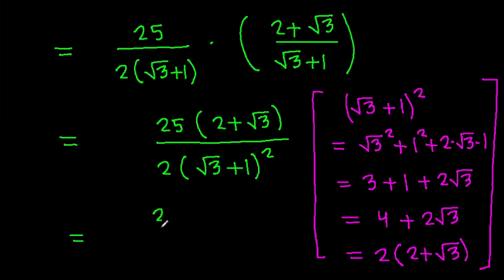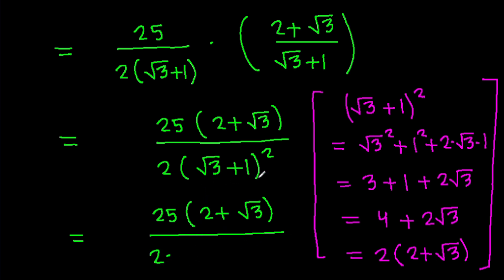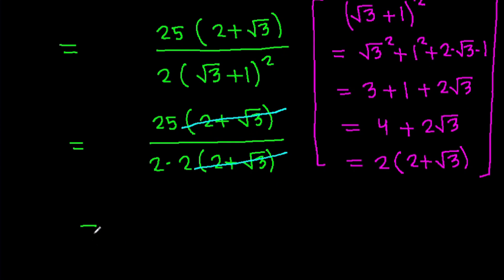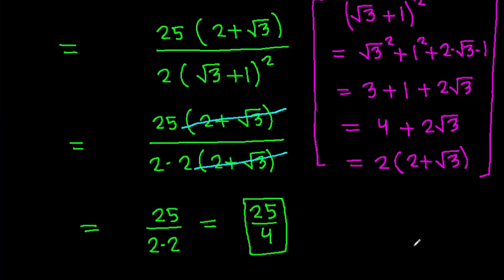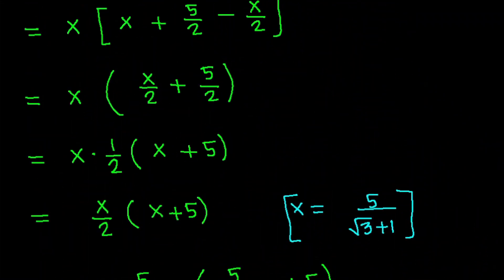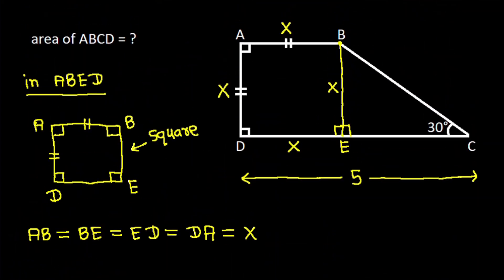So it is 25 times (2 plus root 3) over [2 times (root 3 plus 1) squared], which is 2 times (2 plus root 3). And (2 plus root 3) will get cancelled. So it is 25 over (2 times 2), that will be 25 over 4.